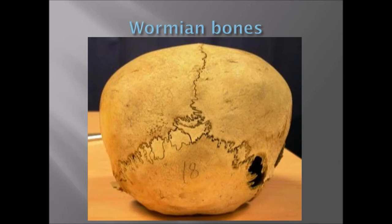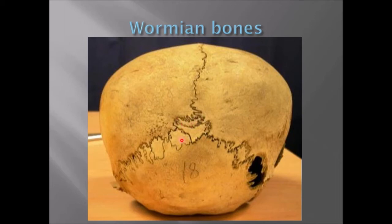Here are what we call wormian or inca bones. These are extra bones that form within the sutures. Here you can see some really busy sutures - and we recognize that very busy sutures go with certain ancestral traits. Back in the mid-19th century, these little extra bones looked like worms, so they were called wormian bones. If you get a very large one at the juncture between the lambdoidal suture and the sagittal suture, we sometimes call those an inca bone, which is highly associated with Asiatic and Native American skulls.